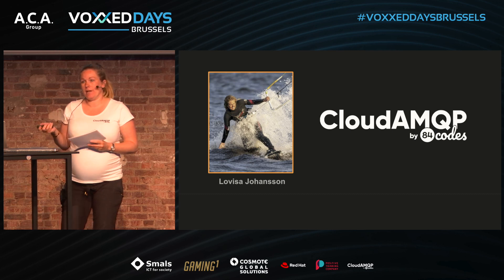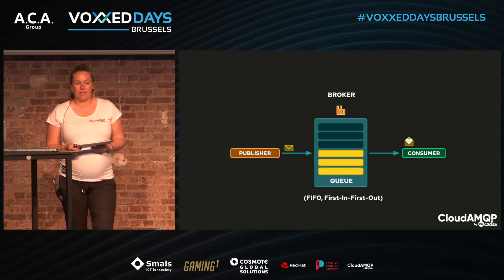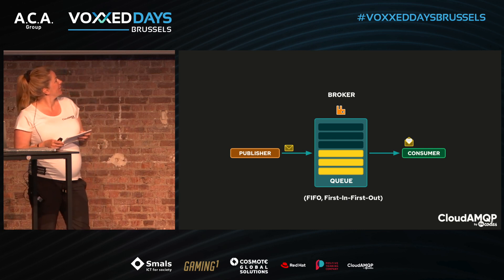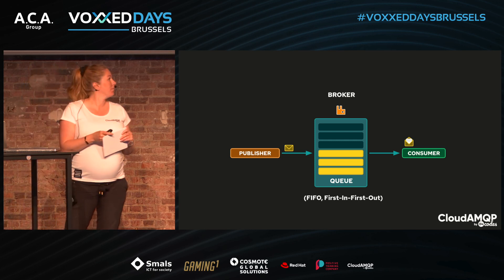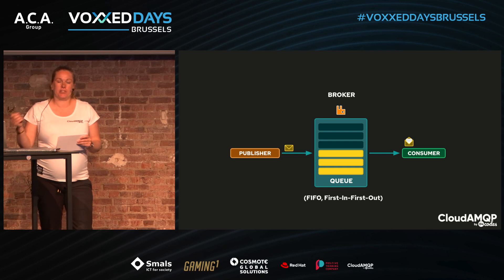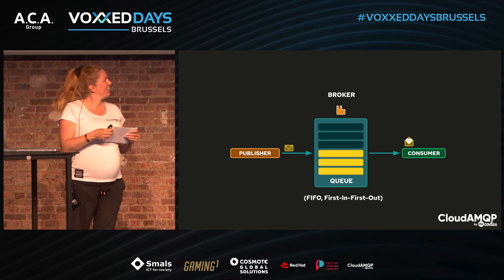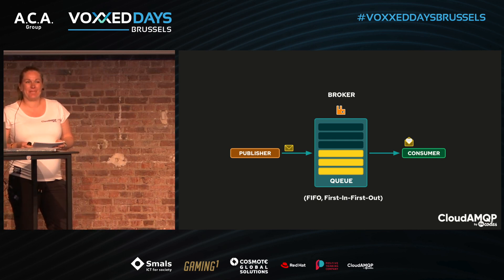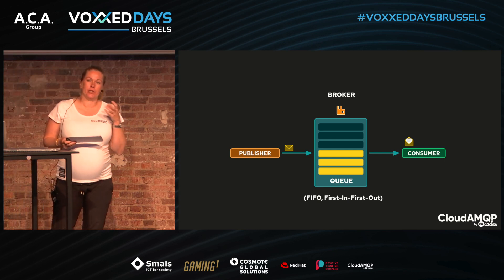The message broker is often the backbone of their architecture and the use cases are not too complicated to understand. Here we have an overview of a simplified architecture: the publisher on one side publishes a message to the message broker, the consumer on the other side consumes the messages from the message broker, and the message broker itself is the software wherein the queues are located.